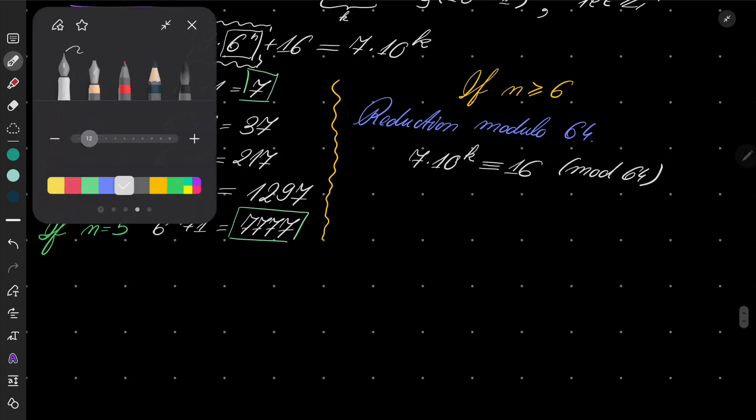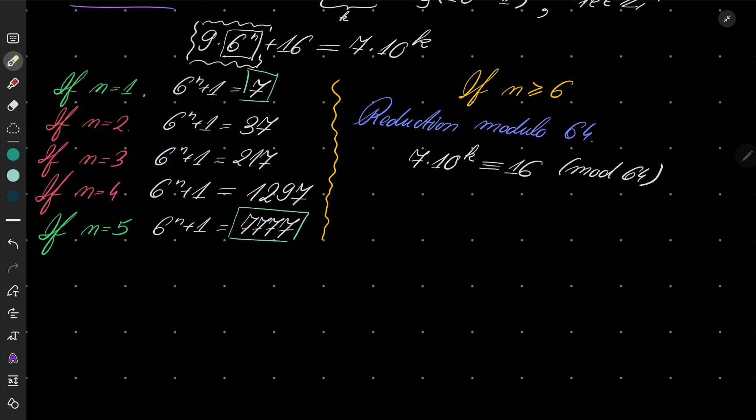That immediately implies that k must be less than or equal to 5. Why is that?